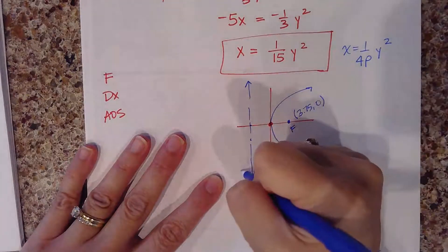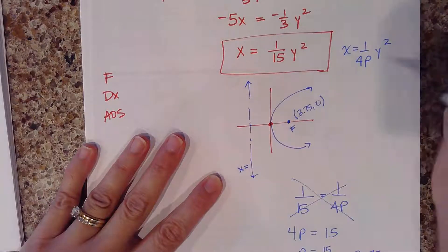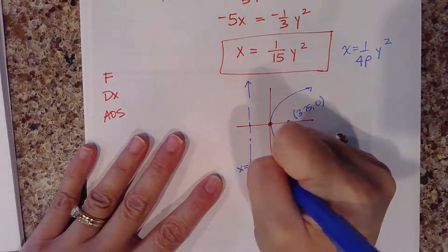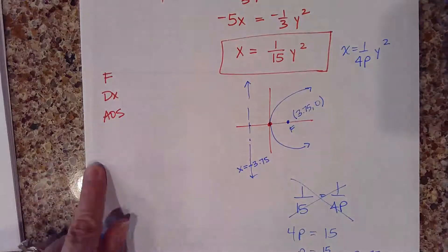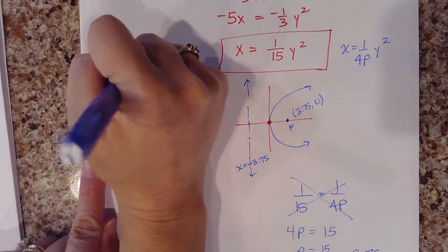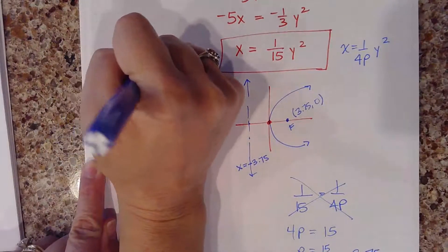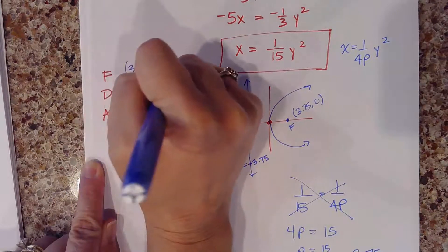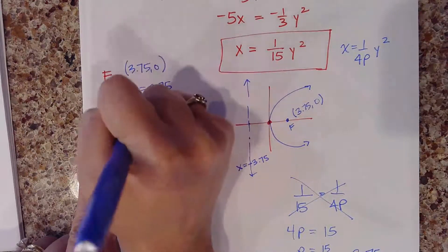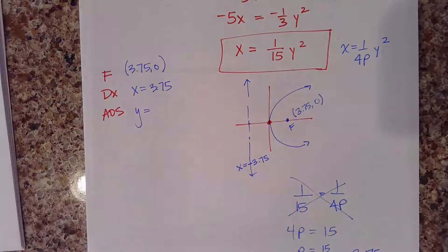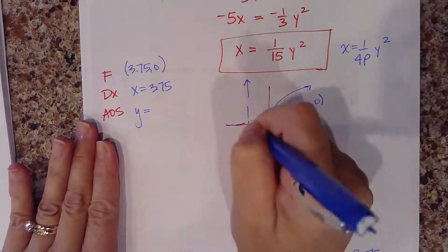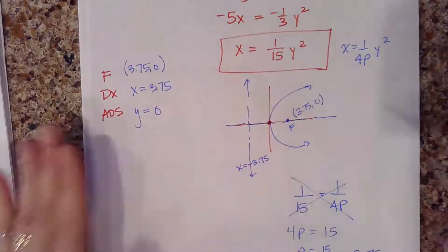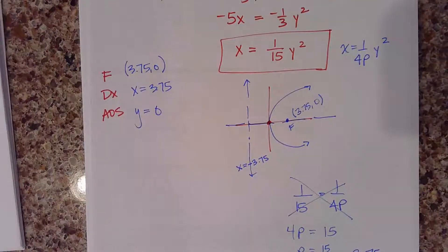And the directrix is the line x equals negative 3.75. My axis of symmetry this time — since it opens left and right — is y equals 0. And that's your graph.